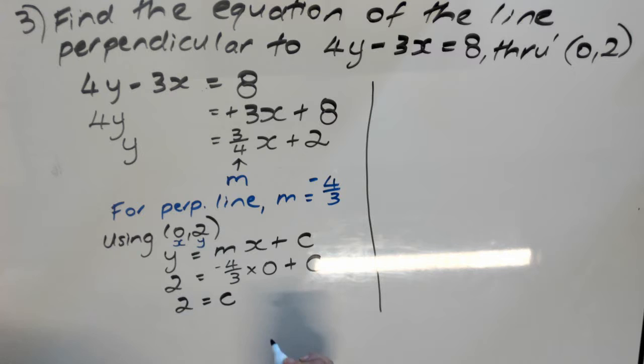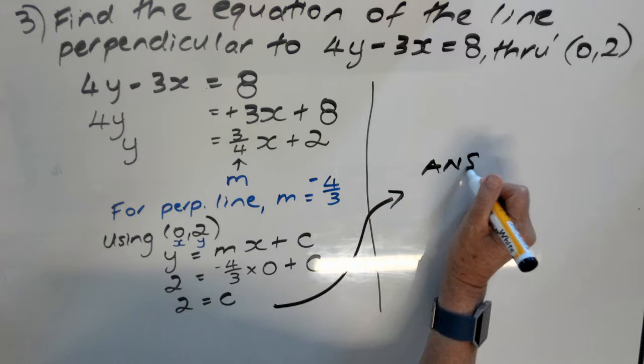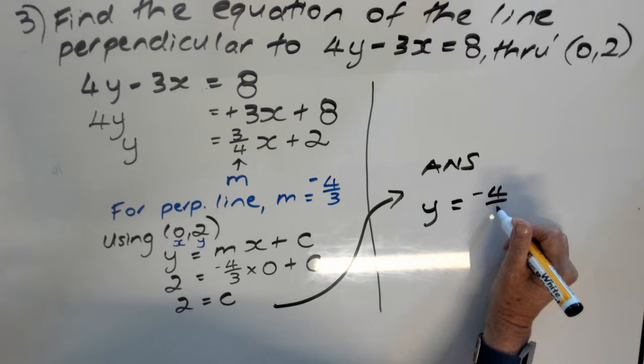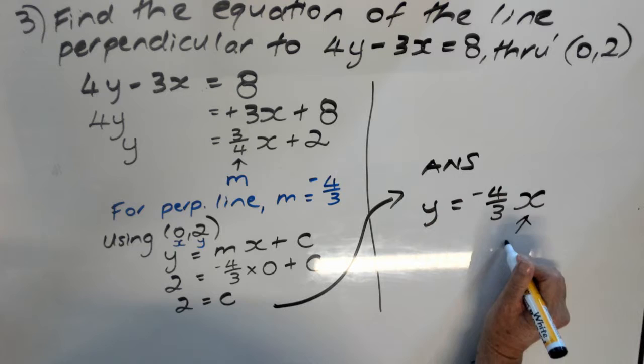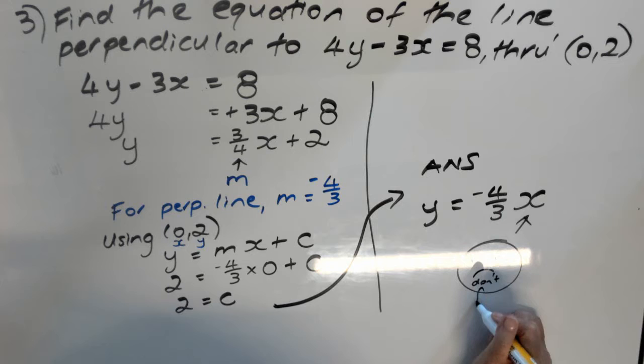Finally, I'm going to write down my full answer. Y, found my m, my m was negative 4 over 3, x. Never forget the x. Lots of people forget the x. Don't forget. Negative 4 over 3 x plus 2.